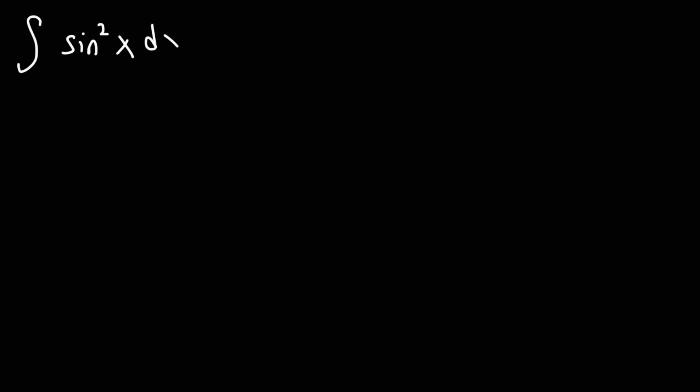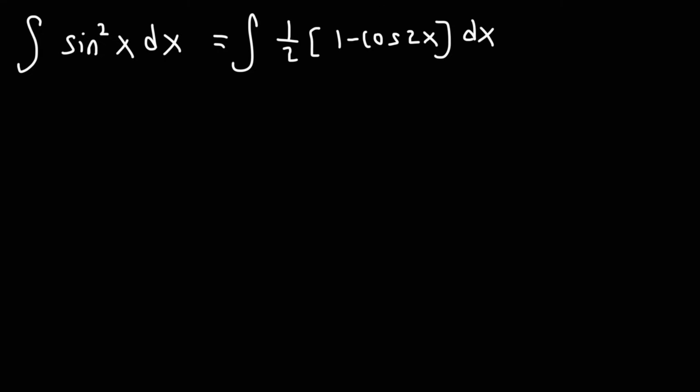The next problem is finding the indefinite integral of sine squared x. This problem is different from what we've been doing. It's not advantageous to convert this into 1 minus cosine squared. In this case, we need to use the power reducing formula. Sine squared equals 1/2 times (1 minus cosine 2x), so we move the 1/2 to the front.